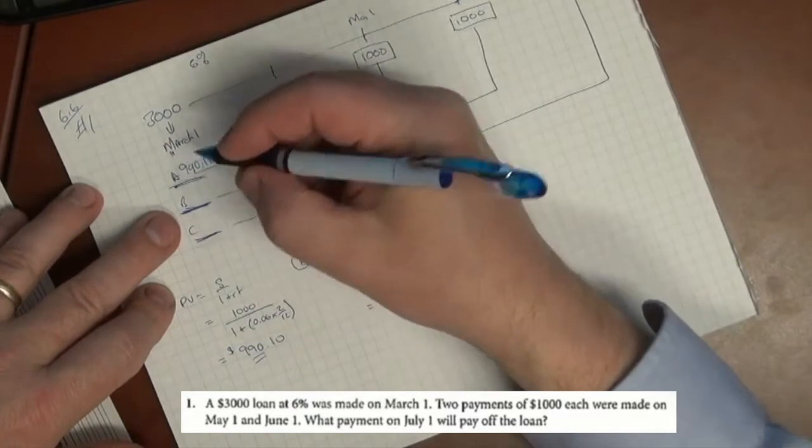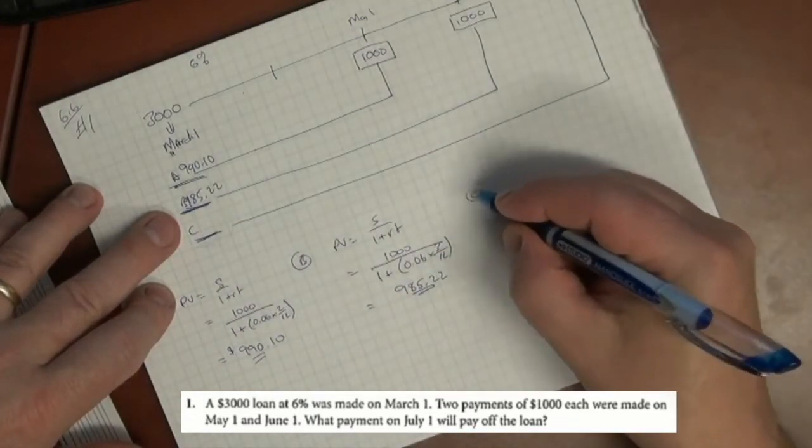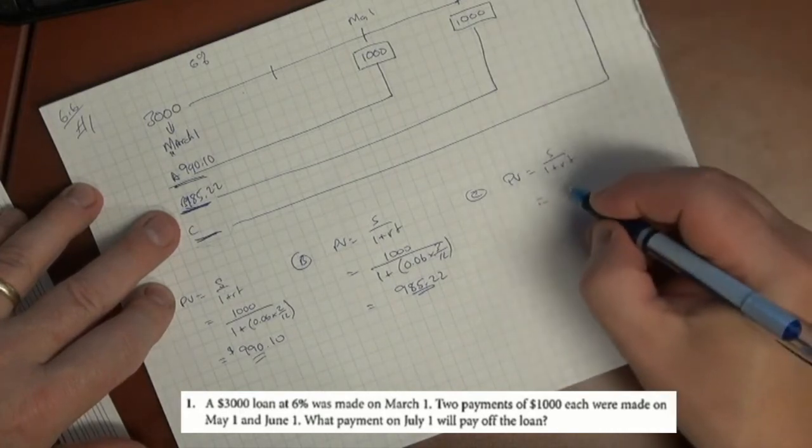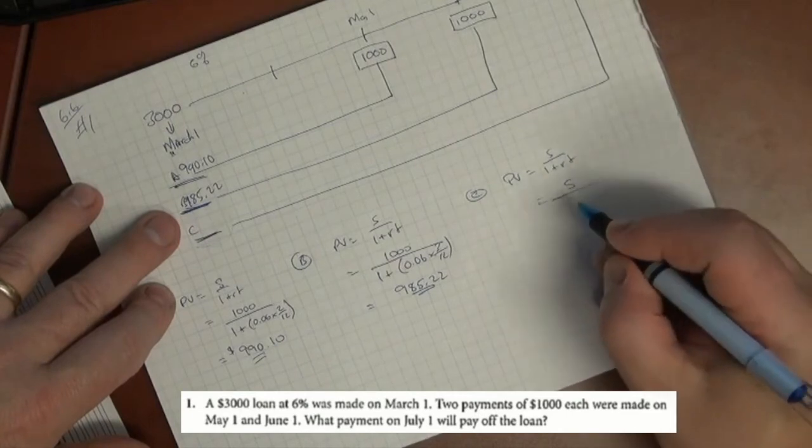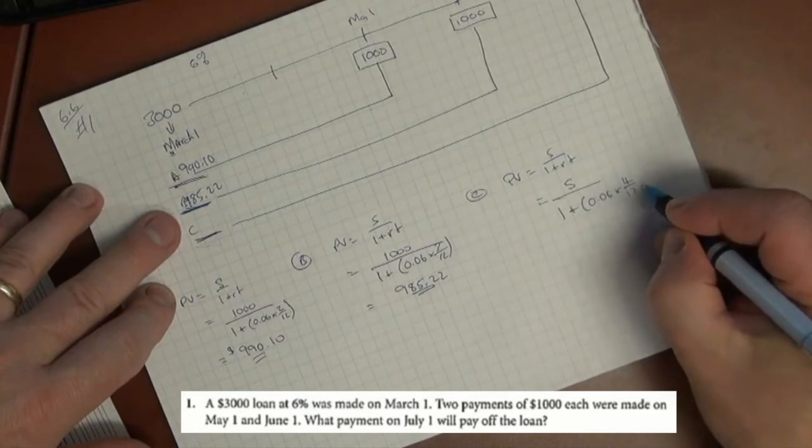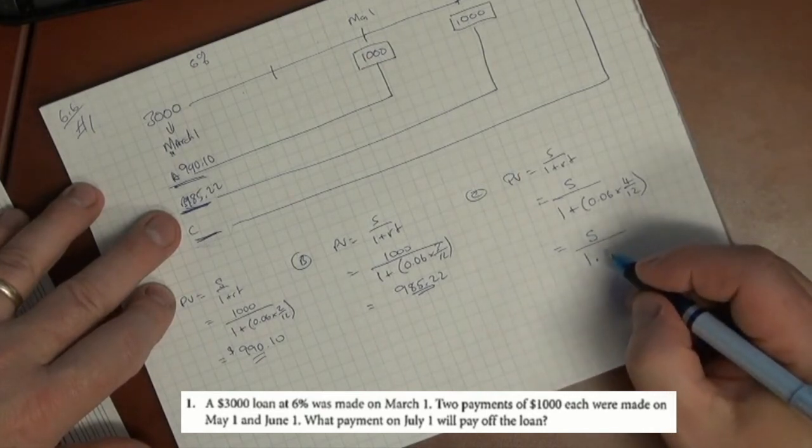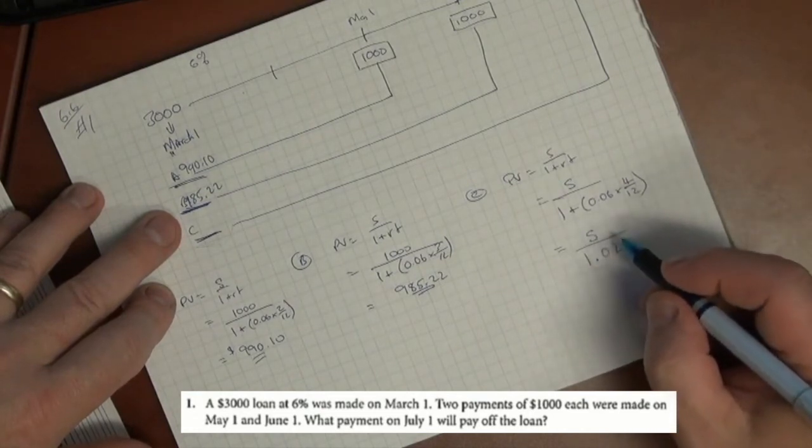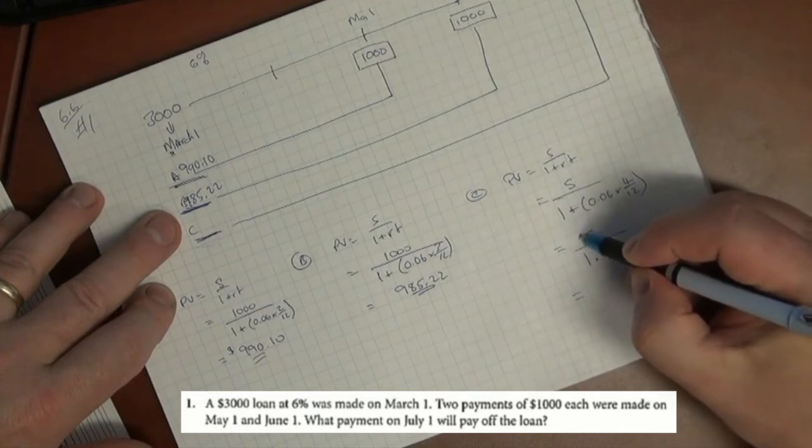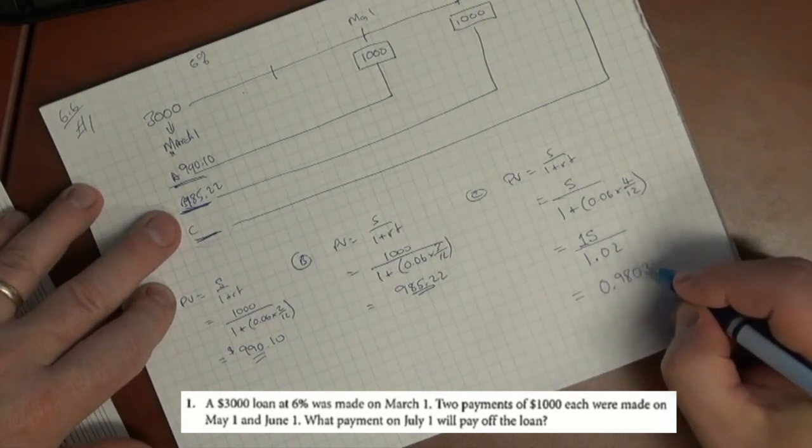The third one is the strange one because we don't have a number for it, but we know the same formula is used. I'll call that S, this mystery amount here, divided by 1 plus 0.06 times 4 months - 4 over 12. So what we have here is S over 1.02. We can convert that: we take 1S divided by 1.02 and we get 0.98039S.